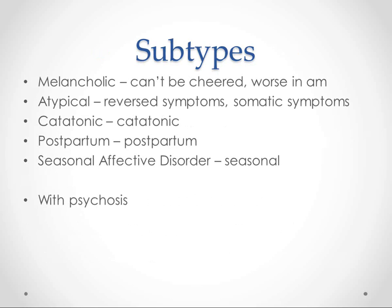There are some different subtypes of depression that may have some effect on the way you treat it. Melancholic depression is the classic presentation — these people can't really be cheered up, so when something good happens they don't really enjoy it. They're also usually worse in the morning. Atypical depression is what I was alluding to with the reverse symptoms: instead of not eating, they end up eating a lot; instead of not sleeping, they end up sleeping a lot. A lot of these people present with somatic symptoms like psychomotor retardation or pain problems as well.